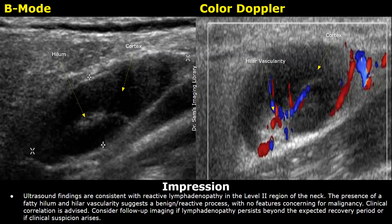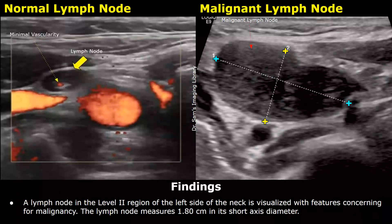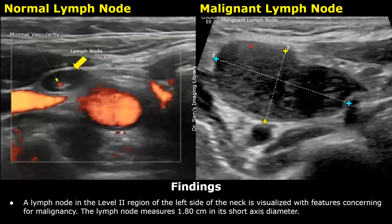Now we have a case of a malignant lymph node. The image on the left is of a normal lymph node, just for comparison. These are the findings: a lymph node in the level 2 region of the left side of the neck is visualized with features concerning for malignancy. The lymph node measures 1.8 centimeters in its short axis diameter.